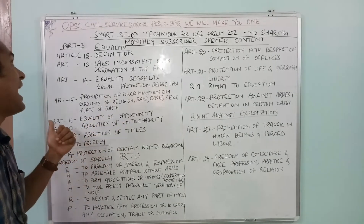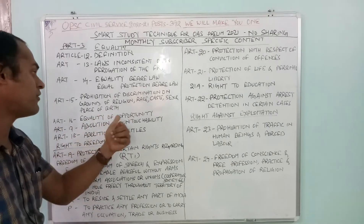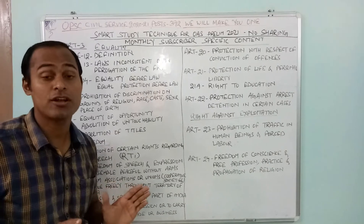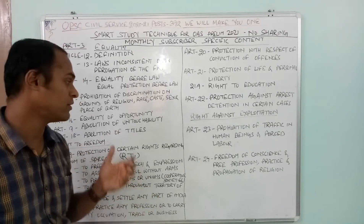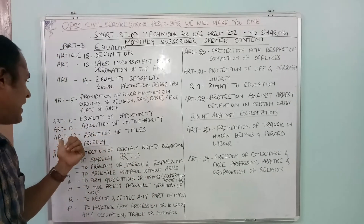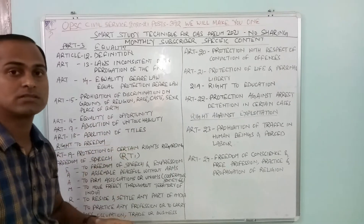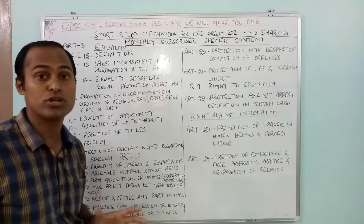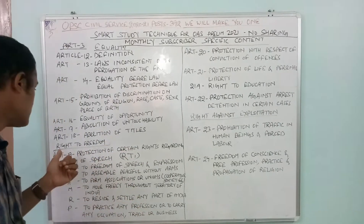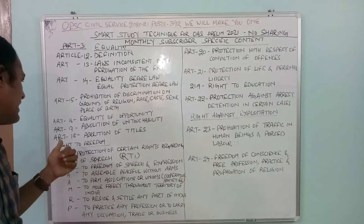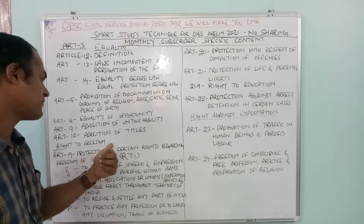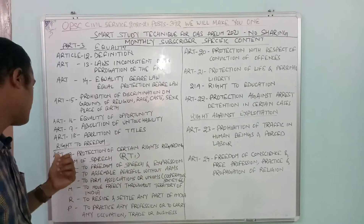Article 17 is the abolition of untouchability, which is very very important. Article 18 is the abolition of titles, also very important. Then comes the right to freedom under Article 19.